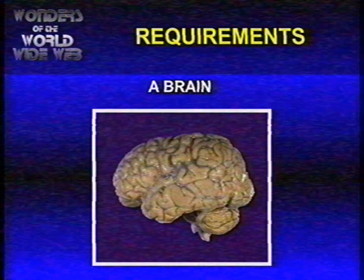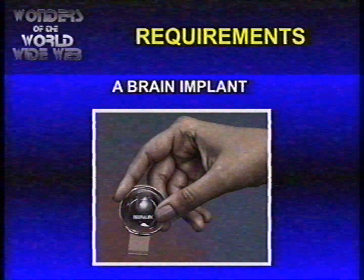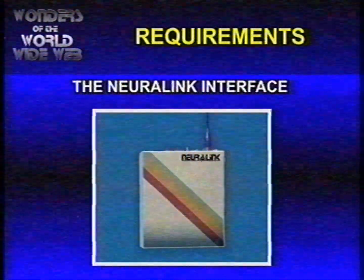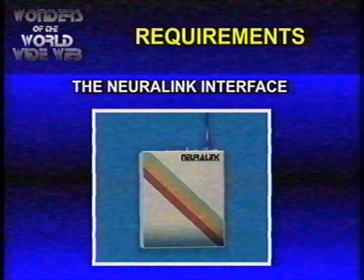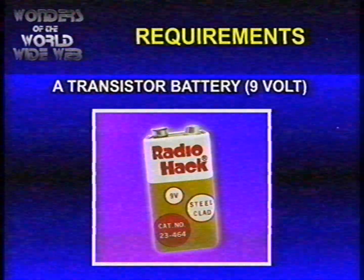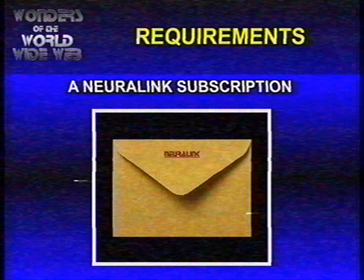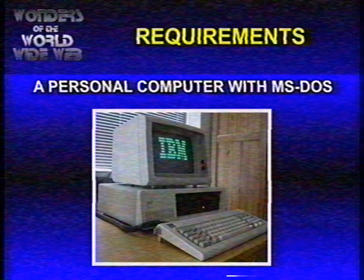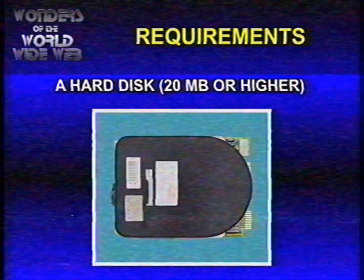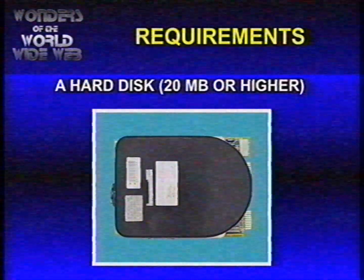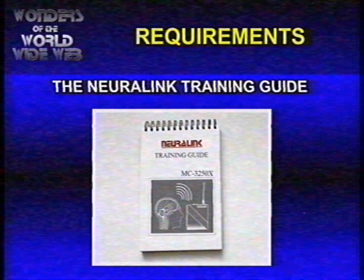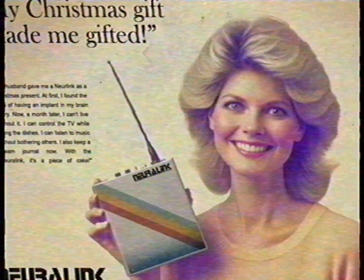For Neuralink you'll need a brain, a brain implant, the Neuralink installation floppy, the Neuralink interface, a transistor battery 9 volts, a Neuralink subscription, a personal computer with MS-DOS installed on it, a hard disk of 20 megabytes or higher is recommended. Also the Neuralink training guide is recommended. You may have seen the advertisements in magazines.